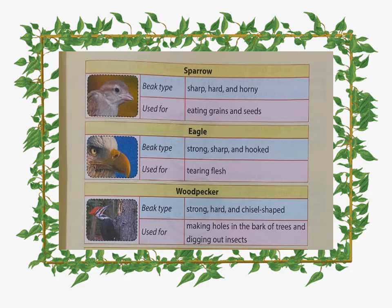Second one is the eagle. The eagle's beak type is strong, sharp, and hooked. The use of this beak is for tearing flesh. That is why it is sharp and very strong, with a hook to help tear the flesh of its prey.